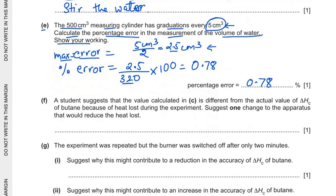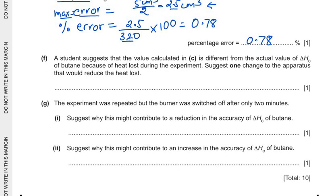Let's go ahead with the next part. A student suggests that the value calculated in C is different from the actual value of the enthalpy change of combustion of butane because of the heat loss during the experiment. Suggest one change to the apparatus that would reduce the heat loss. The only thing which is possible here is the use of a lid on the container so that the heat loss is less. That's the only solution we can bring, but still there will be some difference but it can be minimized.